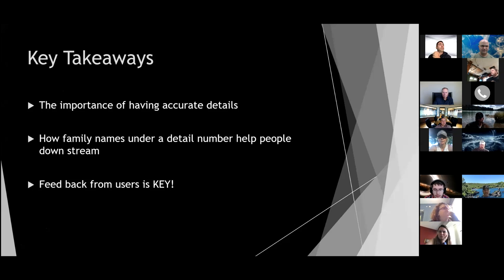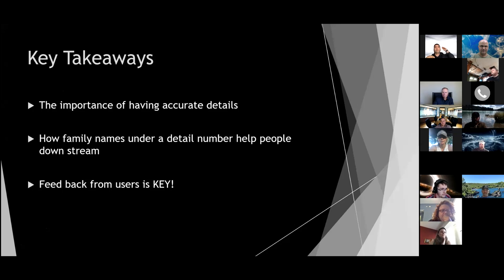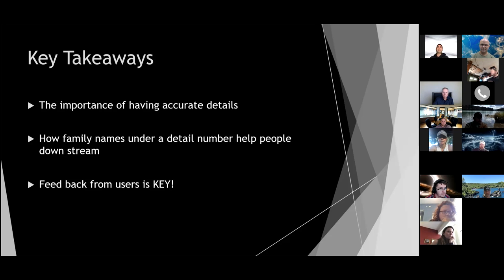The first key things you should be taking away from this presentation: the importance of having accurate details coming from Jumpstart all the way through takeoff, how family names under a detail number description help the downstream team, and the last key point — feedback from users is key.